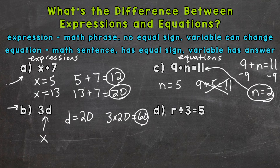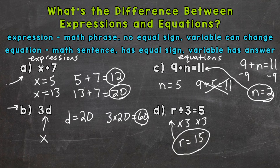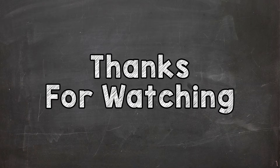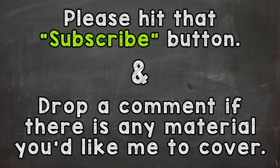And example D — we'll wrap it up by solving for r. Let's isolate our variable. Multiply both sides by 3 and we get r equals 15. 15 is the only value that r can have — it has a defined or set value. So there you have it, that's the difference between expressions and equations. I hope that helped. Thanks so much for watching. Until next time, peace.